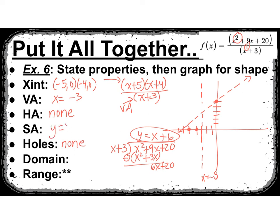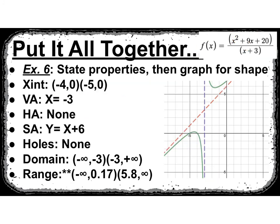Now that we've done all those properties, you can pick up your calculator. Always enter the original just in case you made a mistake with the factored one. What you're going to find is a shape that goes through both x-intercepts. For domain, we come all the way to negative 3: negative infinity to negative 3, and negative 3 to positive infinity. For the range, you have to find the local max and min — so you'd say negative infinity up to approximately 0.17, and then 5.8 up to positive infinity, with that gap in the middle.